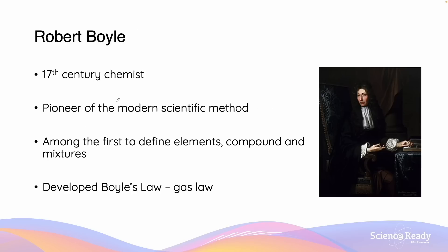Robert Boyle was a 17th century chemist who pioneered the modern scientific method. This meant that he advocated for some of the key principles of scientific method which we use today, such as controls and experiments, and also assessing the scientific rigor of an experiment, such as validity, reliability and accuracy. He was also among the first to define elements, compounds and mixtures.